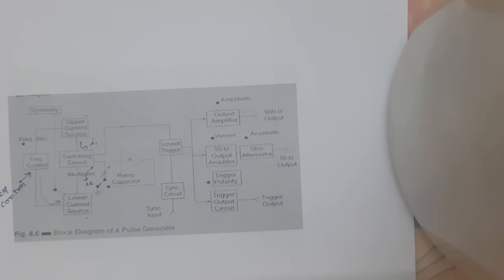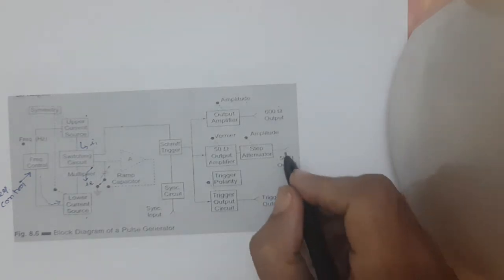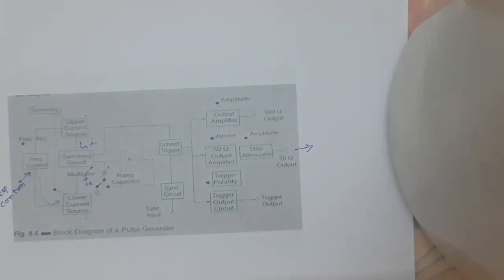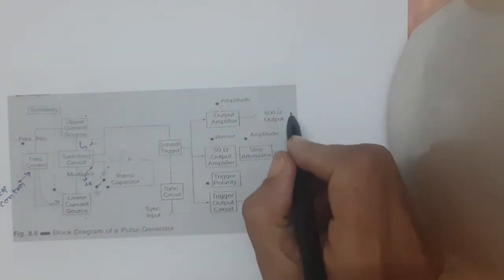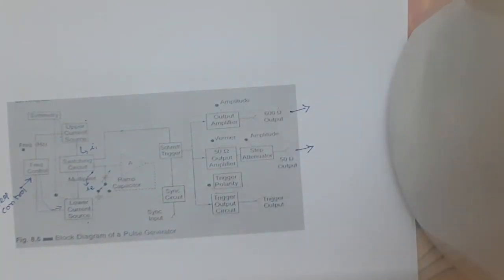Two independent outputs are available. The 50 ohm source supplies pulses with a high nanosecond rise and fall time at 5 volt peak amplitude. The second source is the 600 ohm output, through which we can get 70 nanosecond rise and fall time at 30 volt peak amplitude. The instrument can be operated as a free-running generator or synchronized with an external signal.